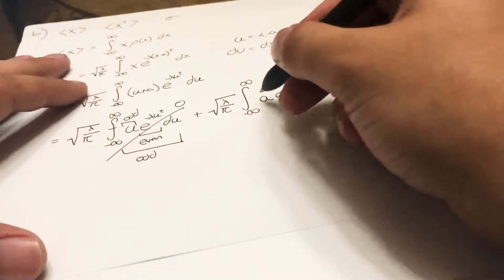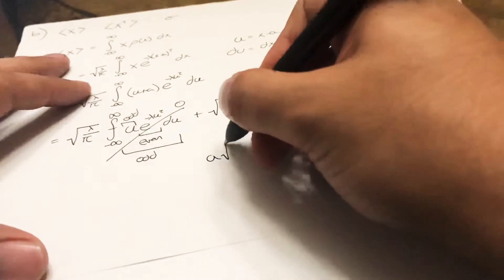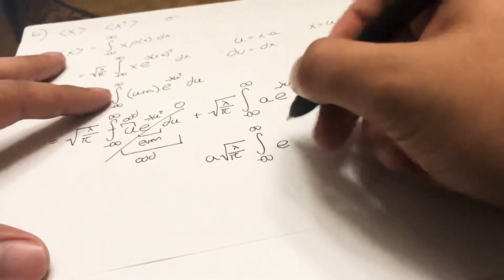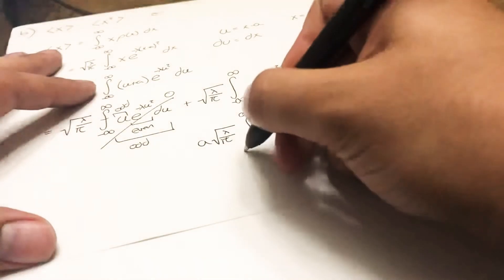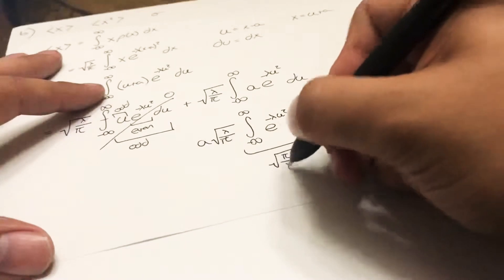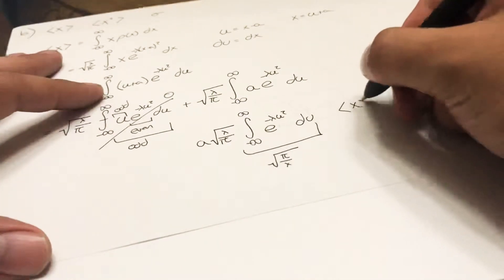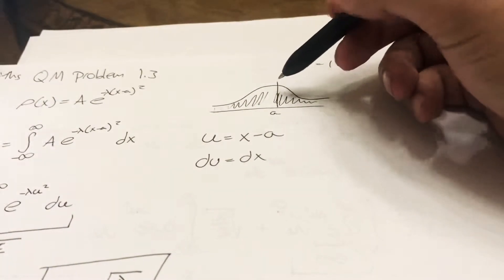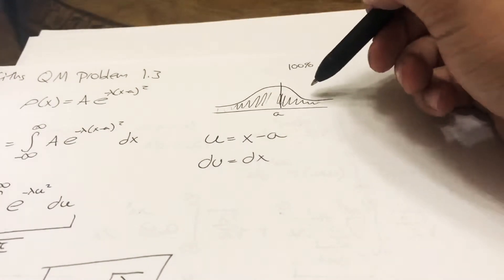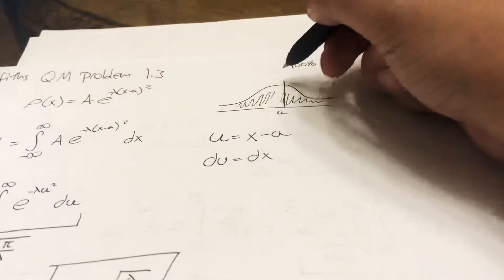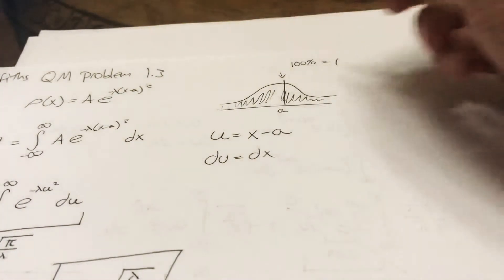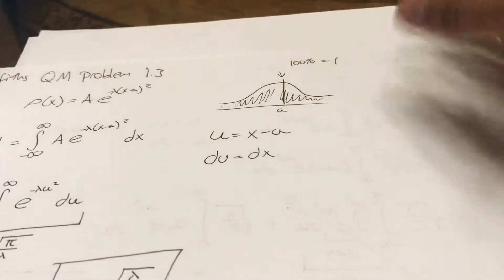All we have to focus on is the second integral. Taking out a, we get √(λ/π) · a · ∫ from -∞ to ∞ of e^(-λu²) du, which equals √(π/λ). Everything cancels, so our expectation value ⟨x⟩ = a. This makes sense because the distribution is symmetric around a, so we'd expect x to most probably be right there in the middle.